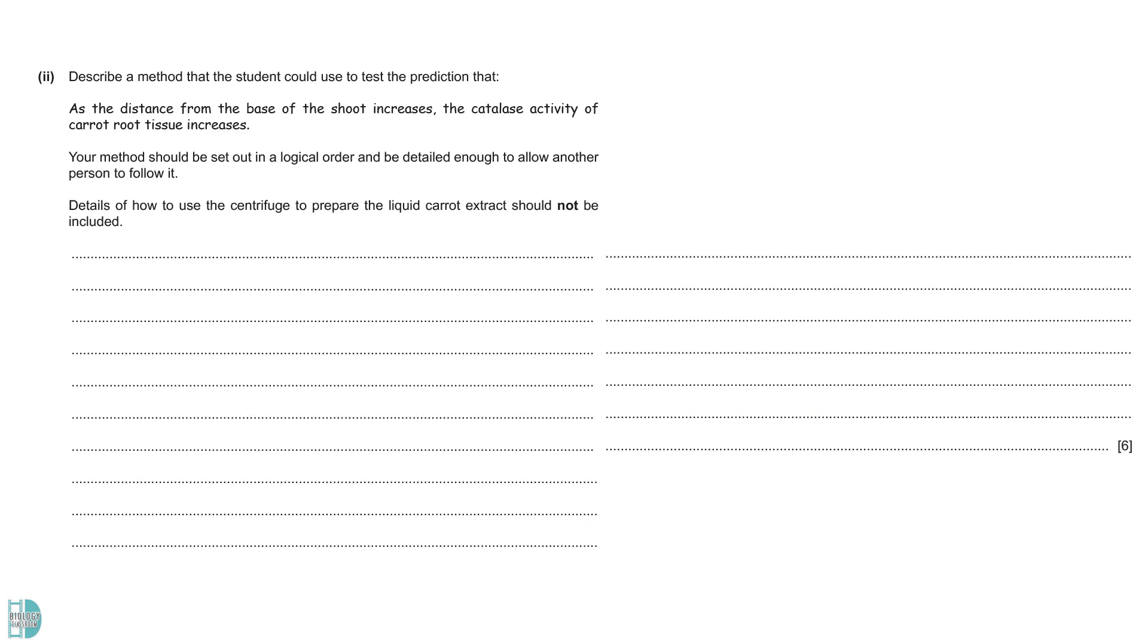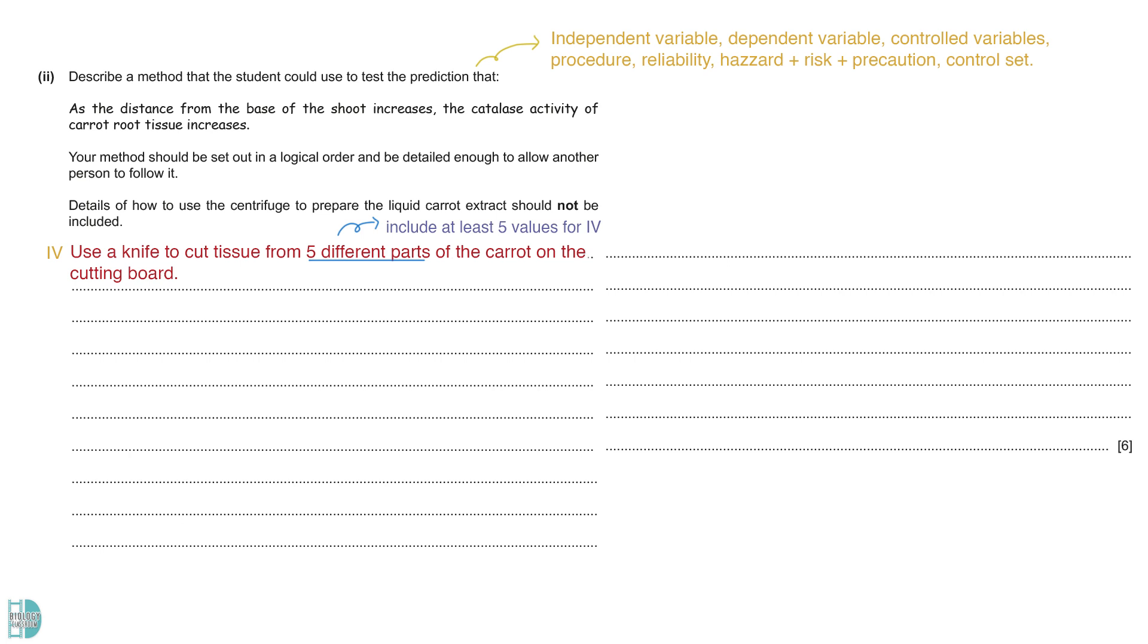Question 2 wants you to describe a method that the student could use to test the prediction. In a design-experiment question, you must include the description of the three variables, important procedure, reliability, safety precautions, and a control set. List down all the points you want to include, then arrange them in a logical sequence. First, describe how the independent variable is fixed.